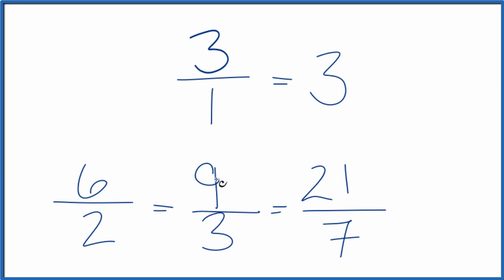6 divided by 2, 9 divided by 3, or 21 divided by 7, or 3 divided by 1. They all equal 3. That's because they're equivalent fractions. This is Dr. B. Thanks for watching.